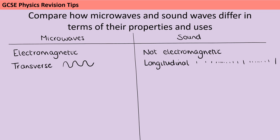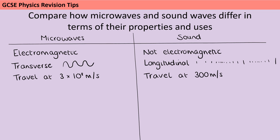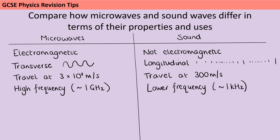They also vary massively in terms of speed — microwaves travel at the speed of light, 3 × 10⁸ meters per second, whereas sound waves travel at around 300 meters per second, so they're much much slower. They also differ massively in frequency: the frequency of a microwave is about 1 gigahertz, whereas the frequency of a sound wave is about a million times smaller — for human hearing, roughly 20 hertz up to 20 kilohertz.